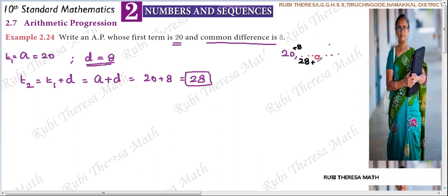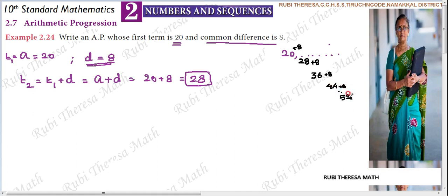The third term: again add 8. So 36 is your third term. The fourth term: add 8 to the third term, so 44 is your fourth term. Then 52, and it goes on. You have to find four terms or six terms in the sequence - generally write an AP.